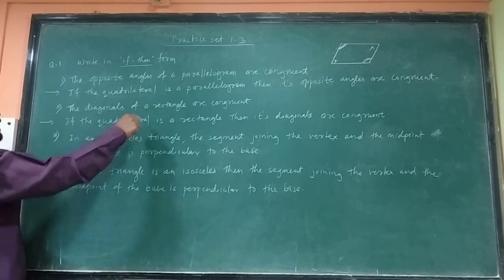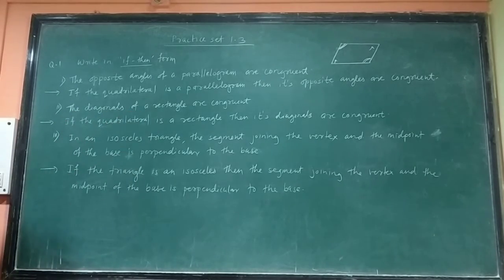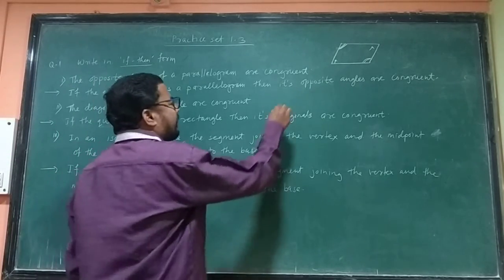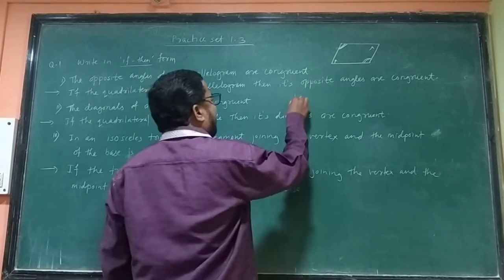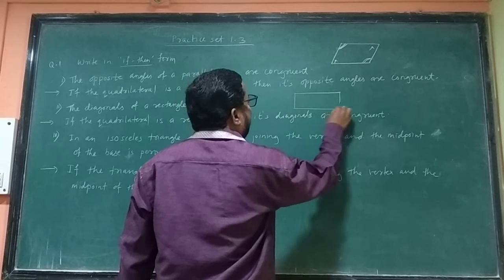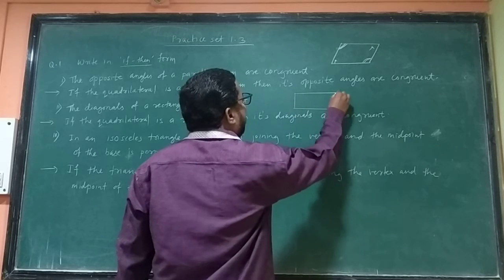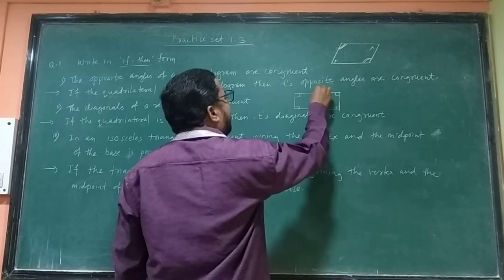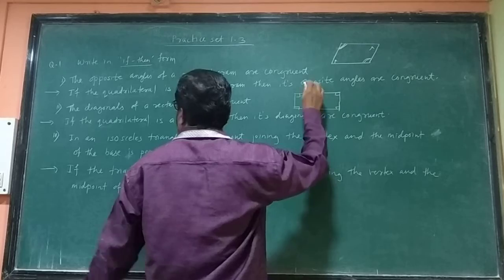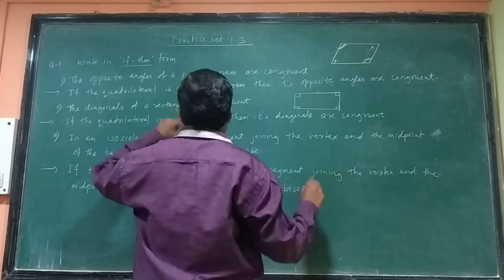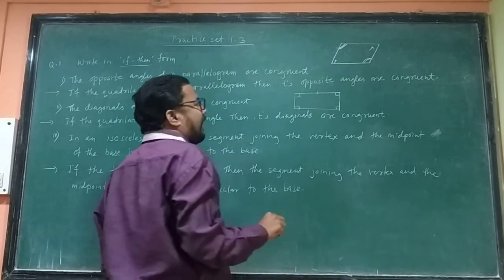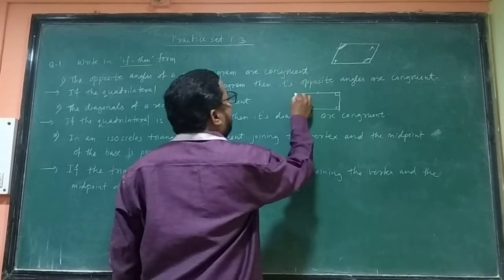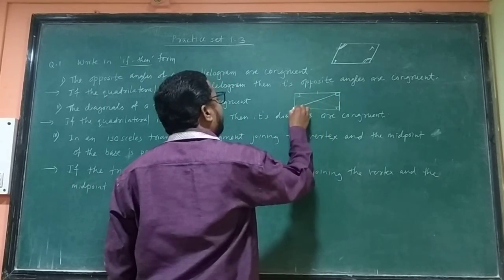The diagonals of a rectangle are congruent. If the quadrilateral is a rectangle, then its diagonals are congruent.